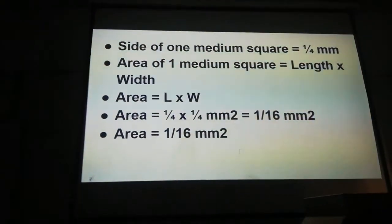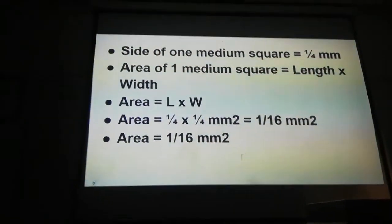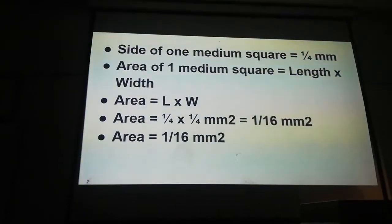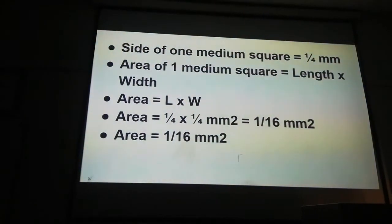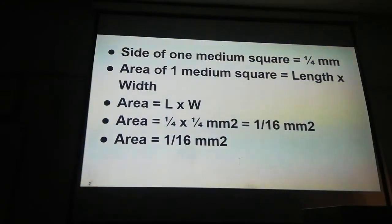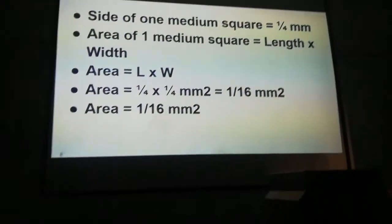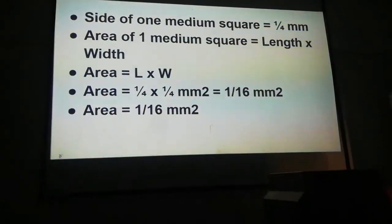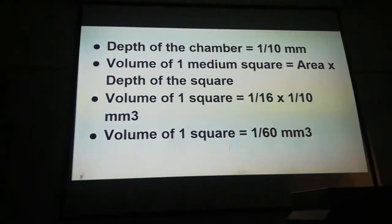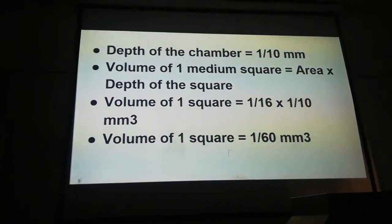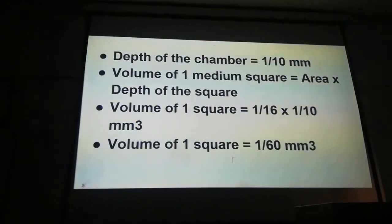Since both length and width of the medium square are 1/4th of a millimeter, multiplying 1/4 × 1/4 gives an area of 1/16 mm². The area of 1 medium square is 1/16 mm². The depth of the Neubauer chamber is 1/10 mm — this is constant, as it is how the chamber is made.